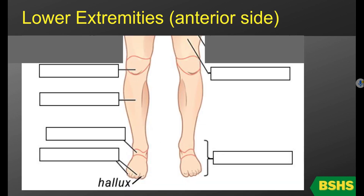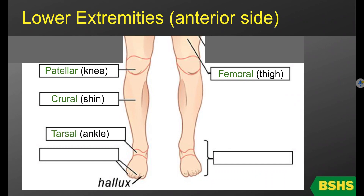Last, we're going to talk about regions of the lower extremities. On the anterior side, you have femoral — which is the thigh. Patellar is the front of the knee. Crural is the shin. Tarsal is the ankle. The phalangeal region, or phalanges, that's the toes. Pedal is the whole foot. And hallux refers to the big toe.